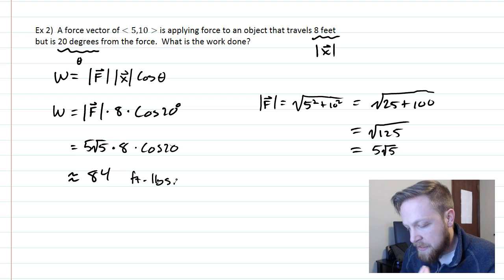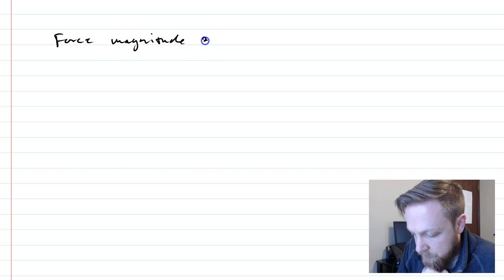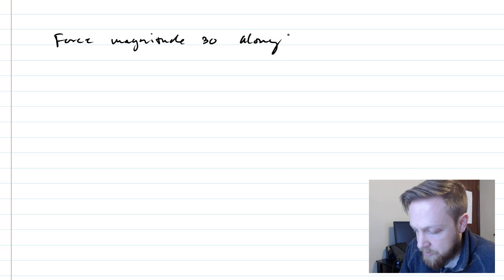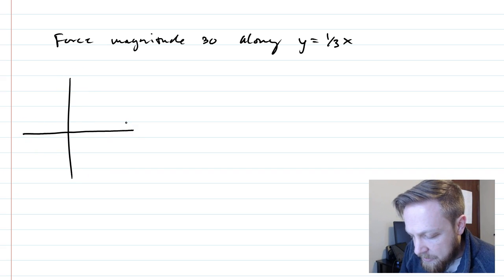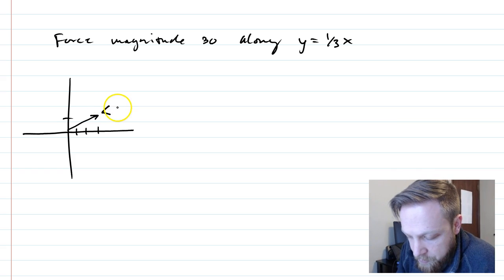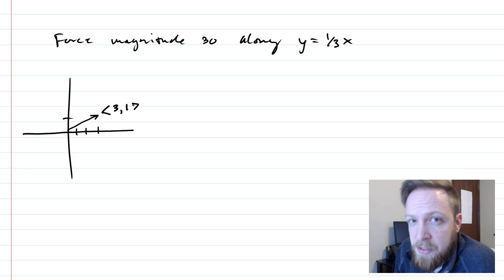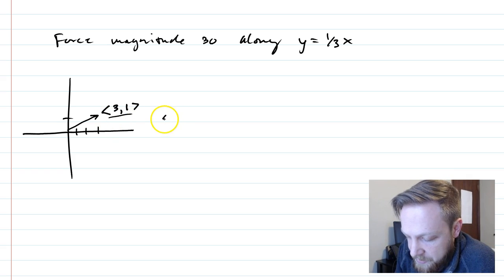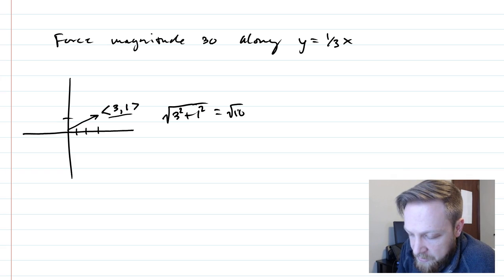Now just be careful because there are going to be some examples where they will have a force, let's say a force of magnitude 30 along, and then they'll give you some equation like y equals one-third x. The thing about y equals one-third x is they're telling you a direction: every 3 over you would go 1 up, so that is the direction vector. When I think of y equals one-third x, you're thinking <3,1>. The slope of that is one-third. Now the issue is kind of like the first example we had, the magnitude of this is the square root of 3² + 1², which is the square root of 10, and what we really need is a magnitude of 30.